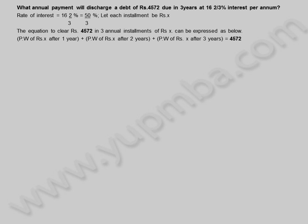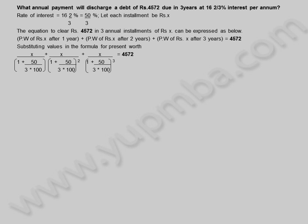Present worth of X rupees after 1 year, plus present worth of X rupees after 2 years, plus present worth of X rupees after 3 years is equal to 4572. Substituting values in the formula for present worth: X divided by (1 plus 50 by 3 into 100), plus X divided by (1 plus 50 by 3 into 100) whole square, plus X divided by (1 plus 50 by 3 into 100) whole cube is equal to 4572.